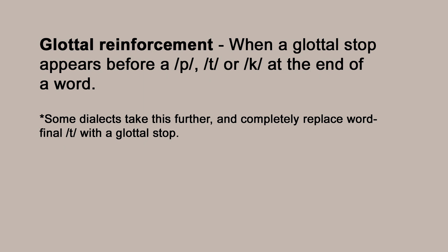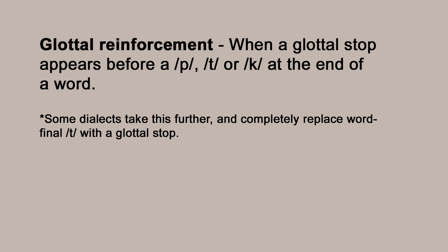Glottal reinforcement is a feature of southeastern English where a glottal stop is inserted before a voiceless plosive at the end of a word — so I say 'goat' with a glottal stop between the vowel and the t. This is a very surface-level phonetic feature and I don't know of anyone who's tried to work out when it appeared. Given how widespread it is nowadays, I personally think it probably did exist in some dialects in 1700, but whether it existed in standard high-prestige dialects I have no idea.